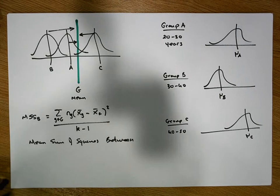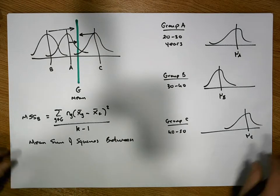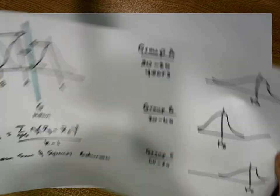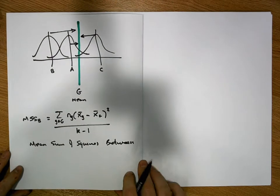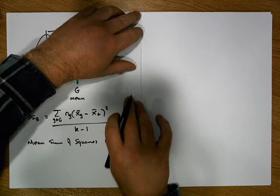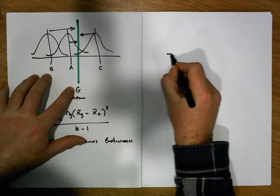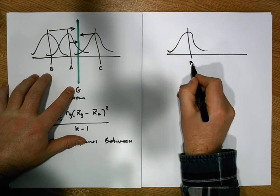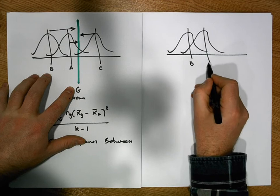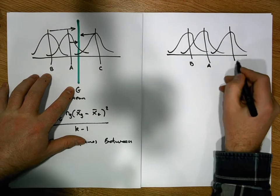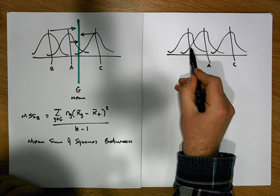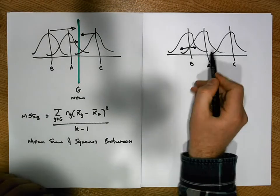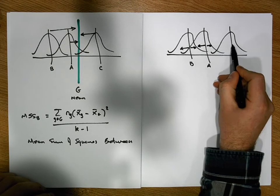That's our first measure to keep in mind. Our second measure is one where we calculate how skinny or how wide, on average, the actual individual distributions are. So taking our distributions again — group A, group B, and group C — the second measure calculates, within each group, how skinny the groups are themselves.